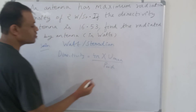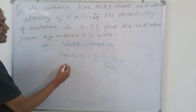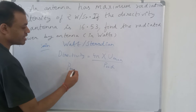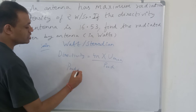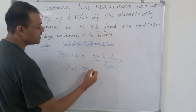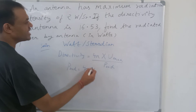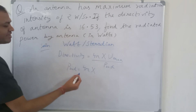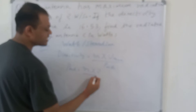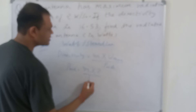We have to find the power radiated. The power radiated will be equal to 4 pi, and the maximum radiation intensity is given as 2, and the directivity is given as 16.53.